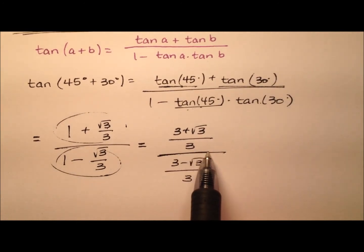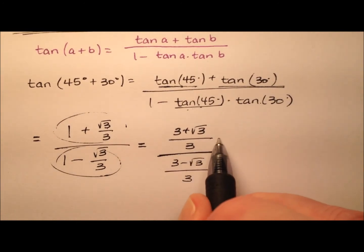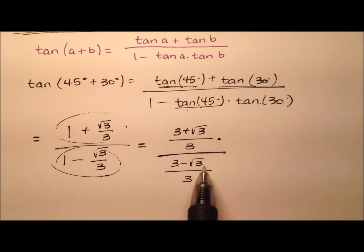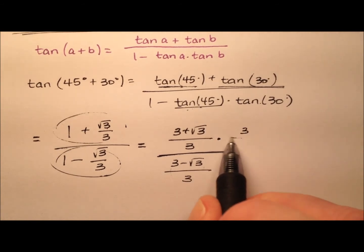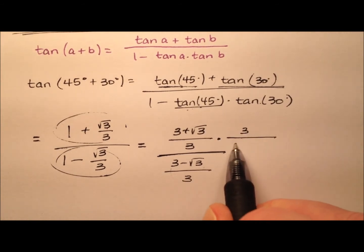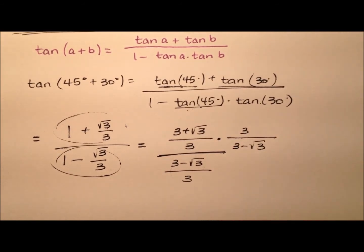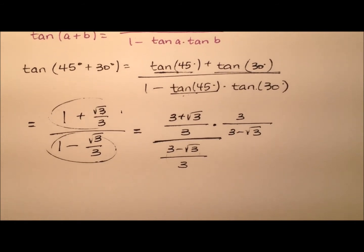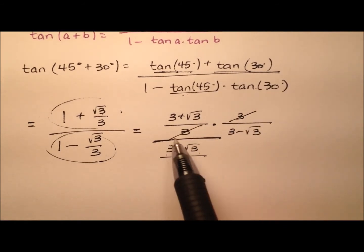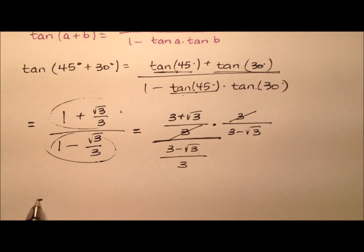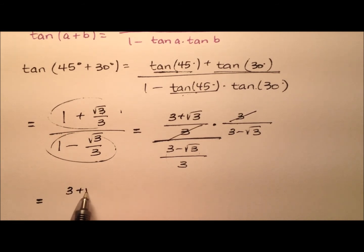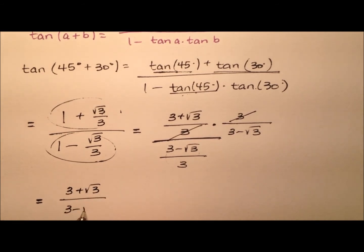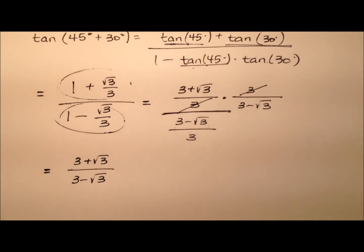When we're dividing fractions, we're really multiplying by the reciprocal, so let's flip that over. We'll have 3 minus the square root of 3 there, and those 3s cancel. So I'm left with 3 plus radical 3 for the numerator and 3 minus radical 3 for the denominator.